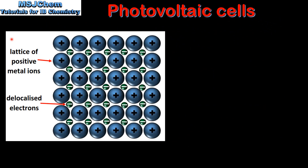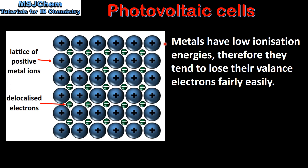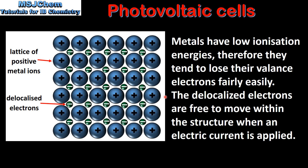In this diagram we can see the metallic structure. The metallic structure is composed of a lattice of positive metal ions with delocalized electrons. Metals have low ionization energies, therefore they tend to lose their valence electrons fairly easily. The delocalized electrons are free to move within the structure when an electric current is applied.